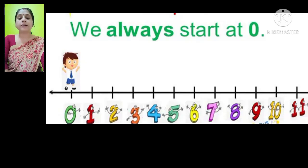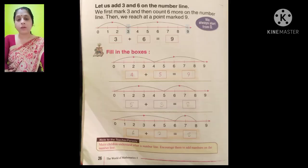Let us add 3 and 6 on the number line. We will always start with 0. Firstly, we will draw a number line. We first mark 3 and then count 6 more on the number line: 1, 2, 3. After this, we have to go 6 numbers forward. After going 6 numbers forward, we have 9. 3 plus 6 is equal to 9. This is the number line representation of 3 plus 6 equals 9.